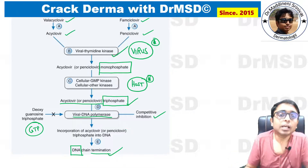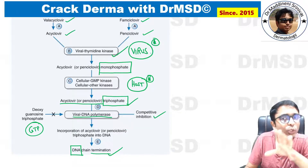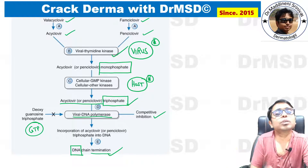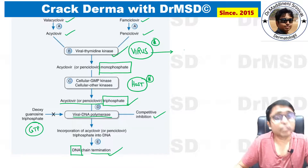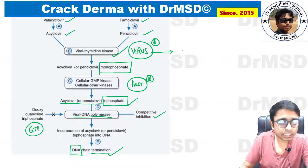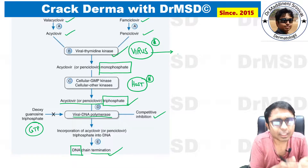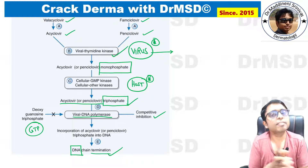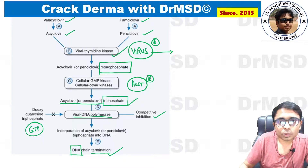Thereby the replication of the virus is halted — it stops. We are happy after giving the medication because the virus cannot replicate and will die off. But the virus is very clever and intelligent. It thought: these humans are using my enzyme thymidine kinase and converting the drugs into a product which terminates my own DNA formation. So the virus mutated.